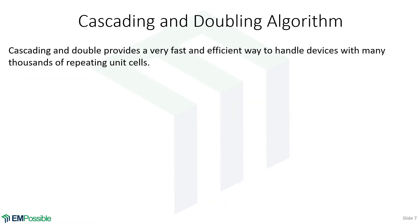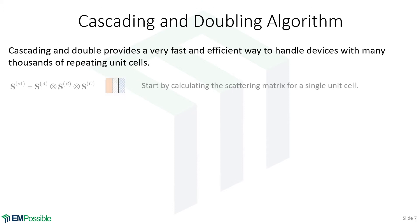The algorithm is called cascading and doubling, and it's probably the fastest and most efficient way to handle longitudinally periodic structures. We start by calculating a scattering matrix that describes one unit cell — denoted 'times one' — by taking the Redheffer star product of the scattering matrices for A, B, and C.